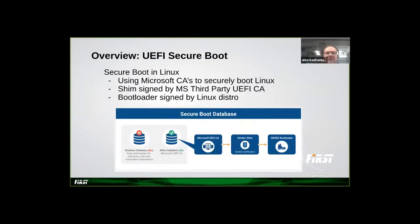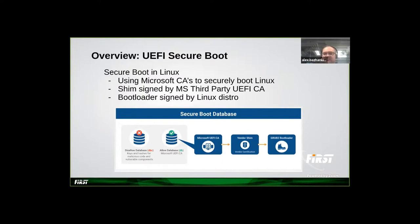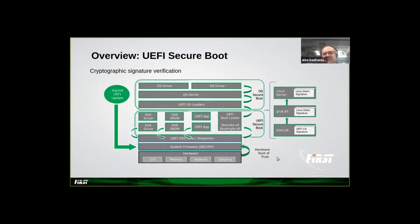This all looks good in theory, but the interesting piece is the allowlist database: all binaries in the allowlist can run. If someone replaces one legitimate shim with another legitimate shim, it still runs. If someone replaces one legitimate GRUB with another legitimate GRUB, it runs. There is no tight binding that a specific binary should only run on a specific platform — it's all interchangeable, and that is also a source of weakness.